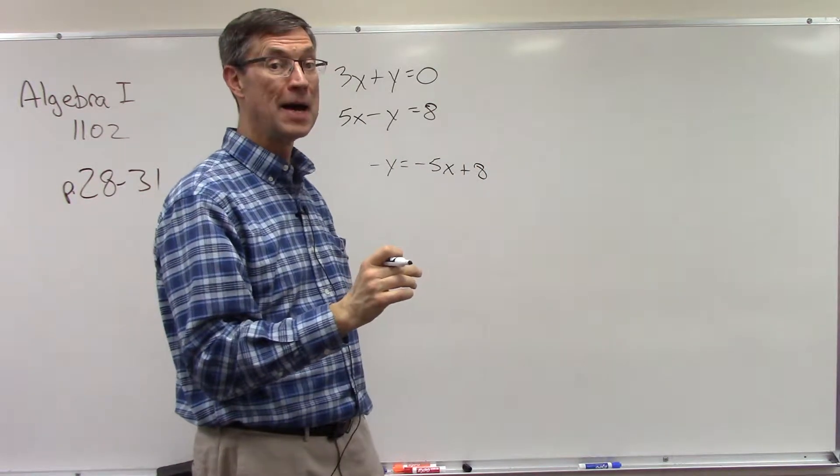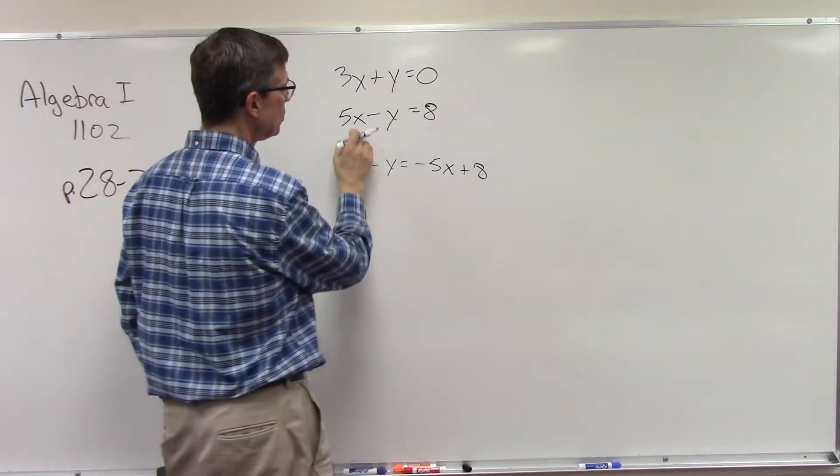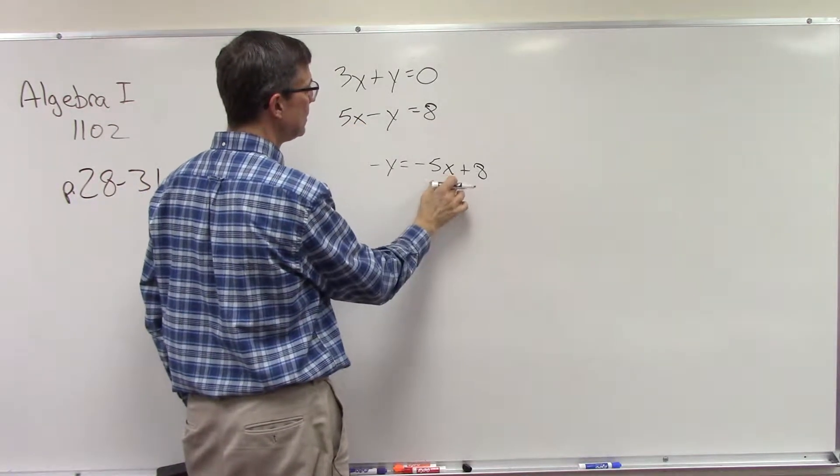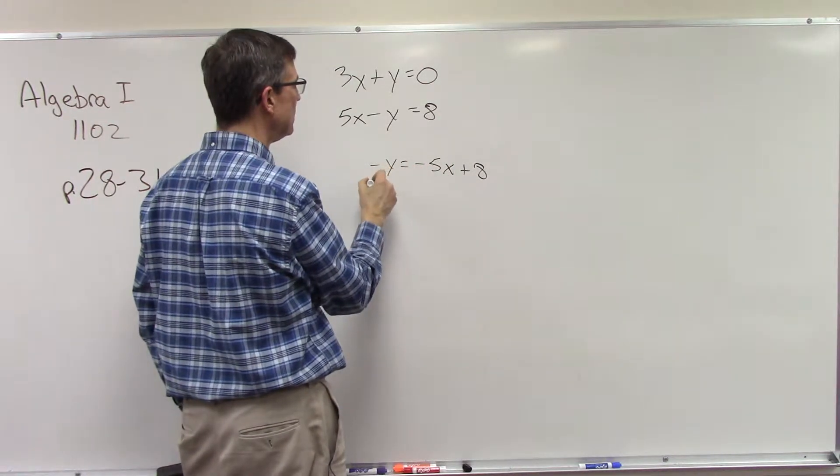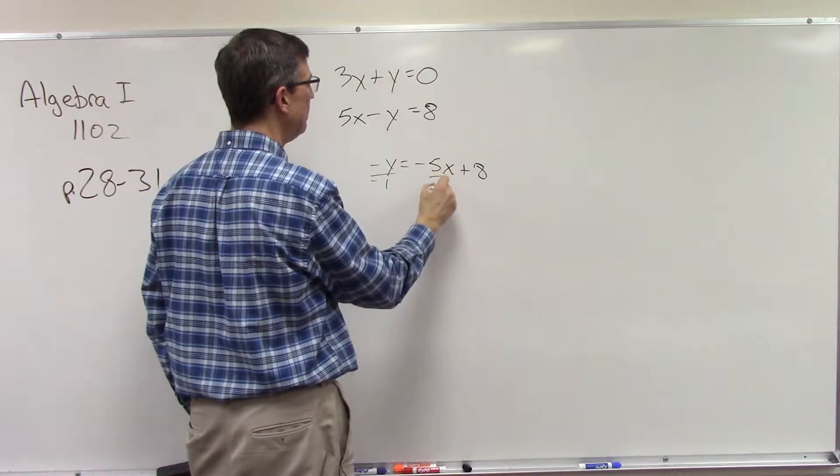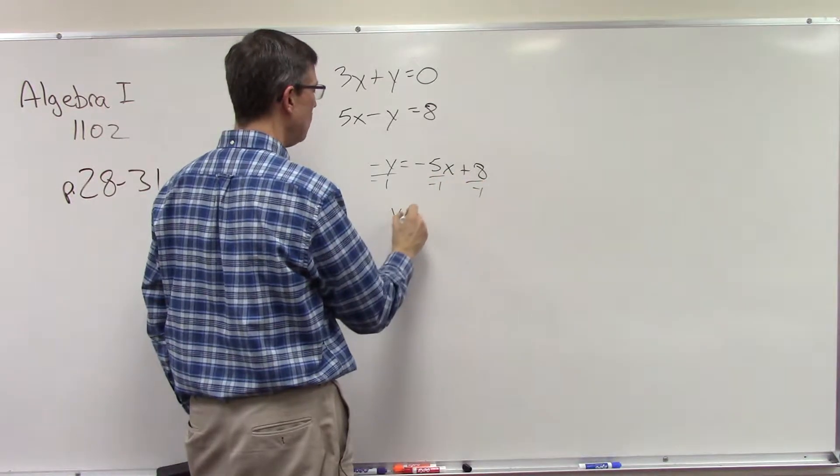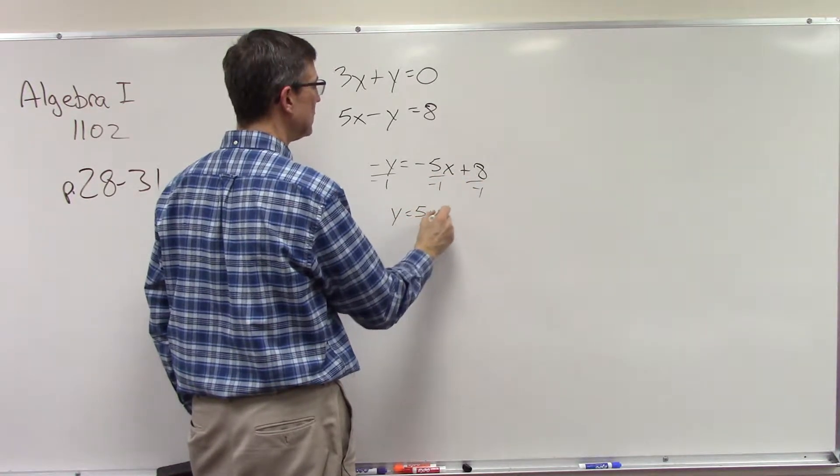But now I have to change everything to its opposite. So it's like I'm dividing by negative 1, so I actually get y equals 5x minus 8.